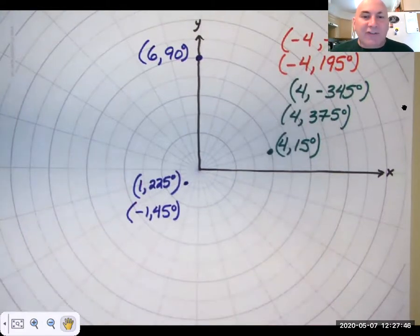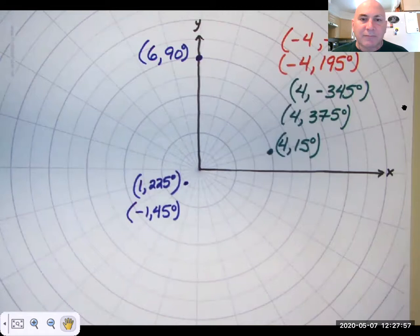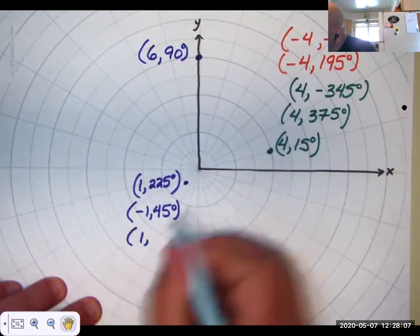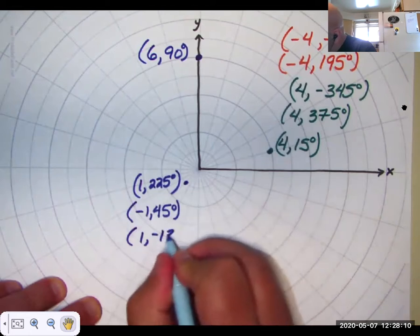Now write it with a positive r and a negative theta. Positive r and negative theta would be 1, negative 135 degrees.